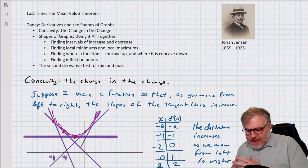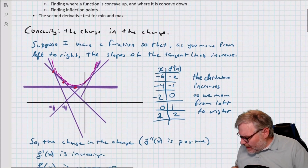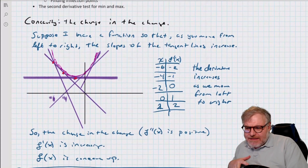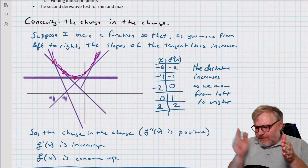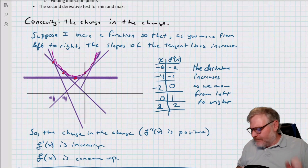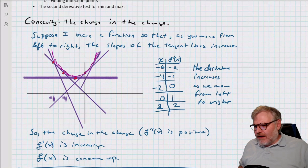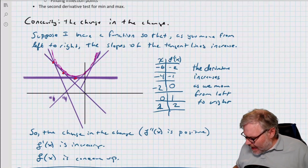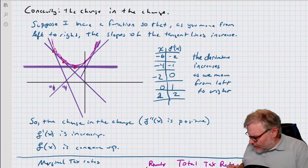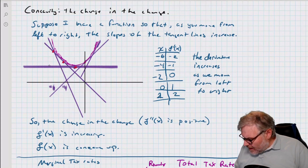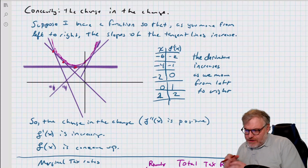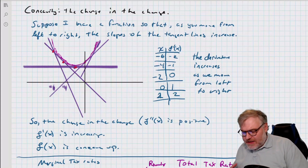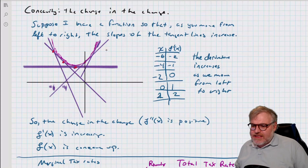Concavity is really the change in the change — that's the big idea. Suppose I have a function where as I move from left to right, the slopes are becoming less negative, then starting to become more positive. So as I move left to right, my slopes become more positive — or less negative. That's concave up. That's a positive second derivative. The derivative is increasing as I move from left to right.